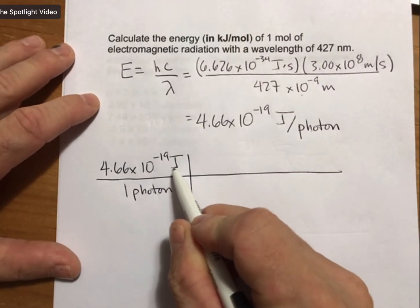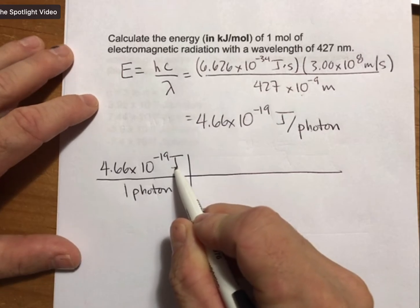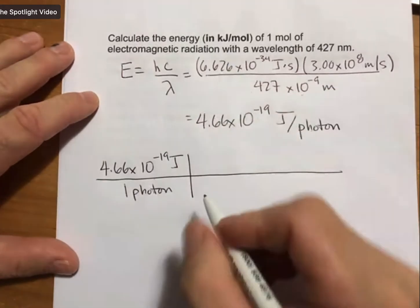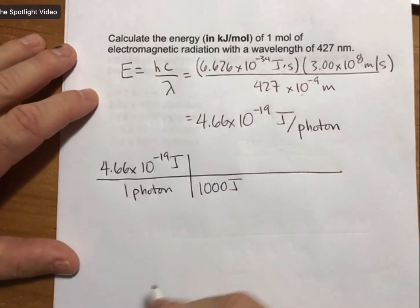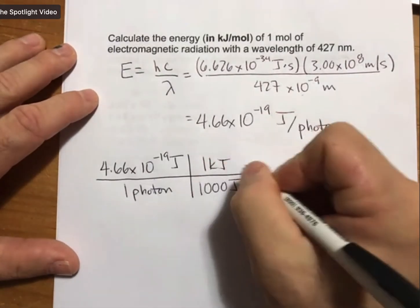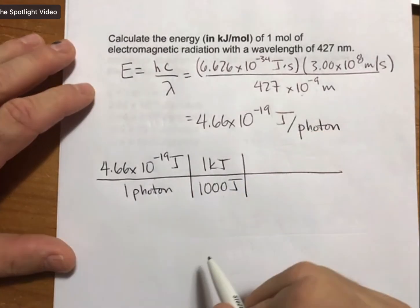So easiest one to do as far as unit conversions as you go from joules to kilojoules. So 1,000 joules is 1 kilojoule. And our unit conversion factor goes above and below it just like that.